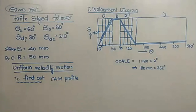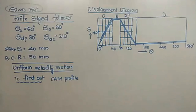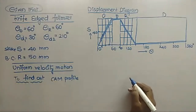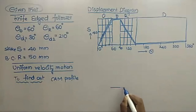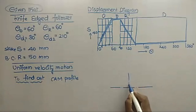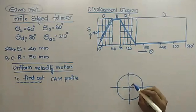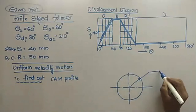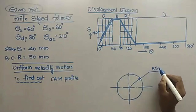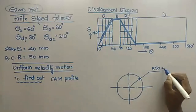Now draw the cam profile. First, draw the base circle with radius 50 mm from the center of the cam. Since the follower is a knife-edge radial follower and the axis of the follower passes through the center of the cam, mark θ = 0 degrees as the starting position. Draw a line at 60 degrees for the end of outstroke, at 90 degrees for end of dwell, and at 150 degrees for end of return stroke.